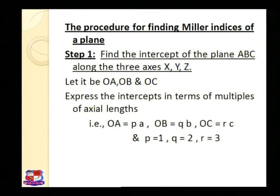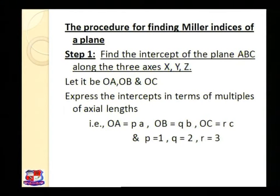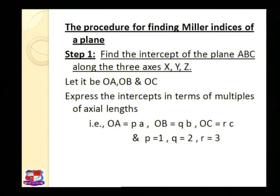Here the procedure for finding Miller indices of a plane: according to step 1, find the intercept of the plane ABC along the three axes X, Y and Z. From the origin, let it be OA, OB and OC. Express the intercepts in terms of multiples of axial length, that is PA, QB and RC. So OA equals PA, OB equals QB, and OC equals RC. Here P, Q and R are the numeric values of the axes: P is equal to 1, Q is equal to 2 and R is equal to 3. That means 1, 2 and 3 are the intercepts of plane ABC.